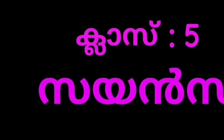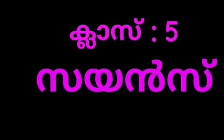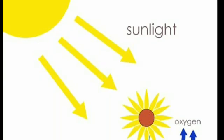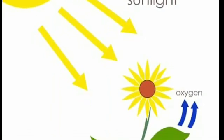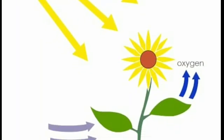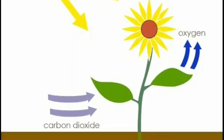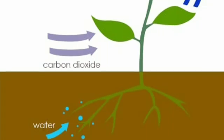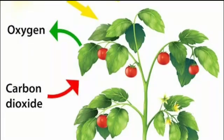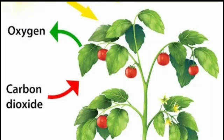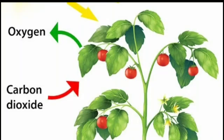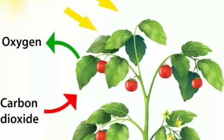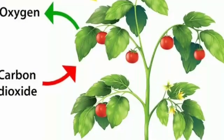Today's class is about photosynthesis. What do we mean by photosynthesis — how do plants prepare food? Do they depend on others? No, plants make their own food. That process is called photosynthesis: the process in which green plants make their own food. Where does a plant prepare its food? The answer is leaves. Plants prepare their food in their leaves — leaves are the kitchen of the plant.